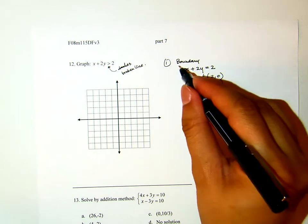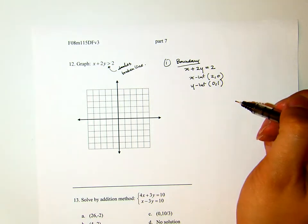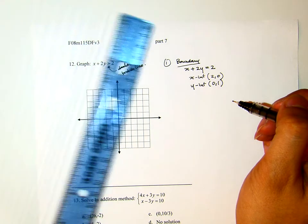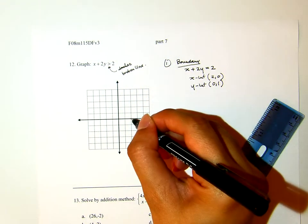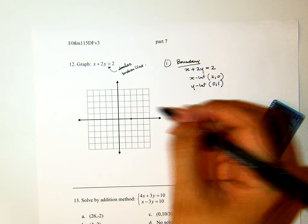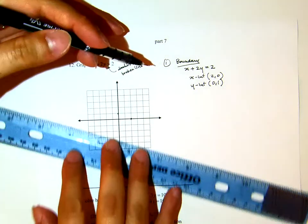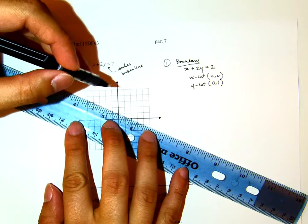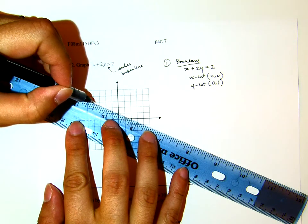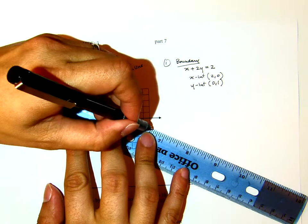That way we find the boundary of this inequality. If I graph that, x-intercept is 2,0 and y-intercept is 0,1. Remember that this will be a broken line. So the graph will be approximately something like this.